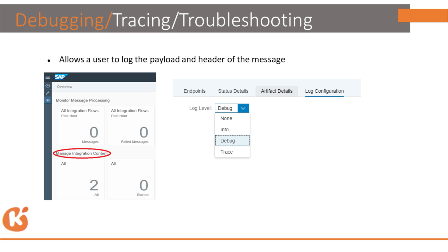CPI is also a monitoring tool. In the monitor section we can debug data, find out why a flow failed, and see what data is being fetched from the back-end system. In the monitor section, go to Manage All Integration Content to see all deployed flows and check whether a flow failed due to message mapping or any other palette.